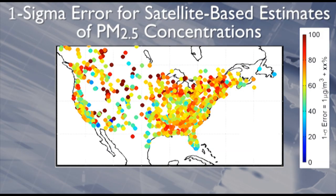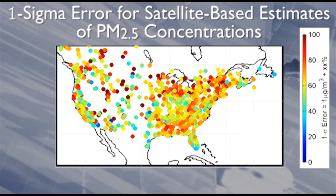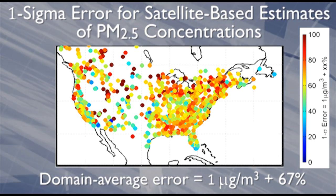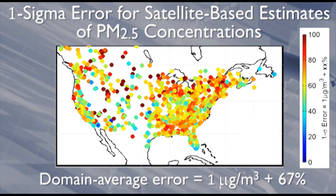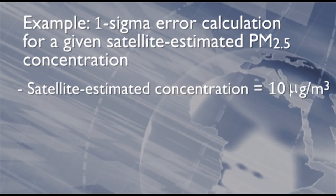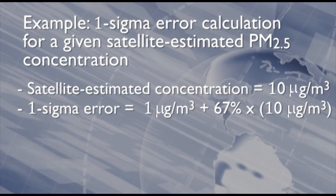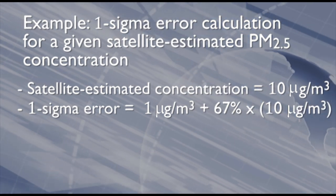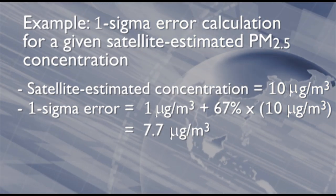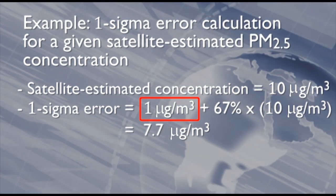This map shows the initial one sigma error at each ground monitor site, before applying two new algorithms. The average one sigma error across all locations was 1 microgram per cubic meter plus 67% of the estimated PM2.5 concentration. For example, the error associated with a satellite-estimated PM2.5 concentration of 10 micrograms per cubic meter is expected to be below 1 microgram per cubic meter plus 67% of 10 micrograms per cubic meter, yielding a one sigma value of 7.7 micrograms per cubic meter. The absolute error of 1 microgram per cubic meter is included to avoid unrealistically low error value estimates in regions with low PM2.5 concentration estimates.